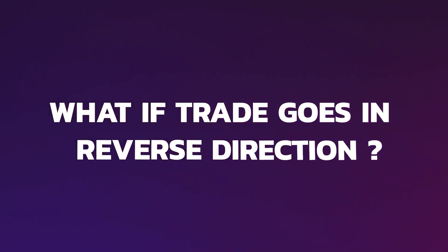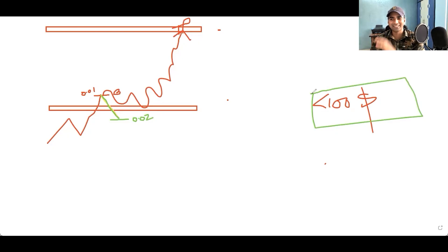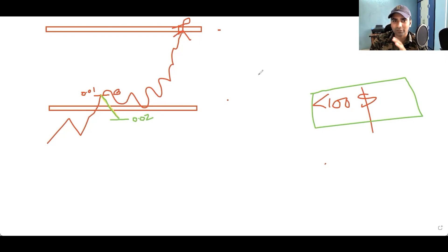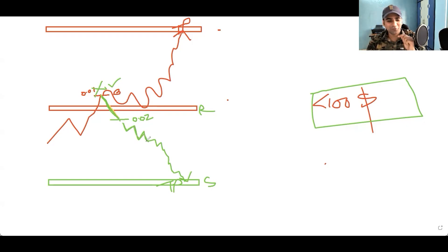Now, what if the trade goes in the opposite direction? If prices go back below the resistance and close below the resistance once again, you are going to multiply your position by two times — that means 0.02 lot. Don't worry about your small account. You will then close that trade at whatever floating negative, multiply the position size by two times, and take a sell trade toward the support zone below.